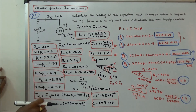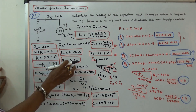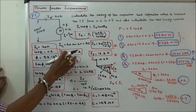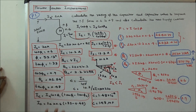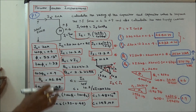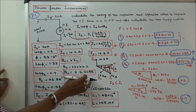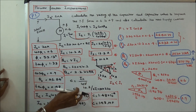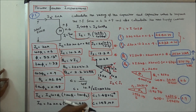Next, we calculate the rating of the capacitor. Qc = V × Ic, where V is the supply voltage. With Ic = 10.2A, Qc = 2.2 kVAR. Next, we calculate the capacitor value: C = Ic / (ω × V), where ω = 2πf and frequency is 50 Hz. The capacitor value is 148 microfarads.